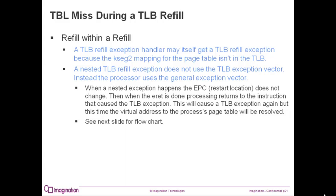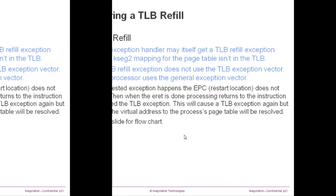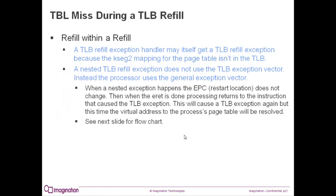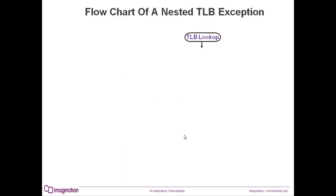The EXL bit being set triggers the CPU to not change the error PC register. The EPC is the program counter of the instruction that got the exception and where execution will start when exception processing has completed. Since it does not get changed and is still pointing to the instruction that caused the first TLB exception, when the nested exception returns, the CPU will get another TLB exception. This time, the process's page table entry will be mapped into the TLB so that it can be used to fill the TLB entry.